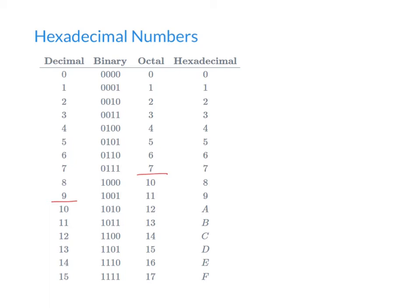Before we look at conversions, let's talk briefly about why hexadecimal numbers are important. When we looked at the octal system we talked about how octal numbers are commonly used because they have the advantage of only requiring three binary bits to express them. Looking down the binary column up to the number 7, the first bit is always zero, so we can express those eight octal digits using just three binary bits each.